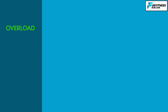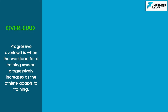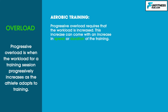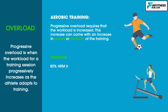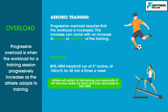Now let's talk about overload. Progressive overload is when the workload for a training session progressively increases as the athlete adapts to training. For aerobic training, progressive overload requires that the workload is increased, either from an increase in speed or duration. For example, if an athlete is doing an 80% heart rate max treadmill run at a 2% incline and 16km per hour for 45 minutes four times a week, they will adapt and it will eventually become easier, meaning they could complete the same training at only 75% heart rate max.